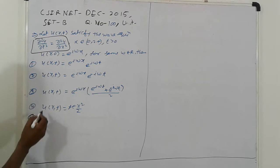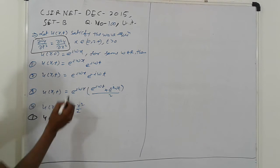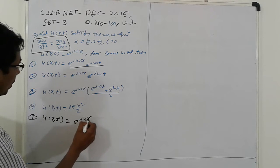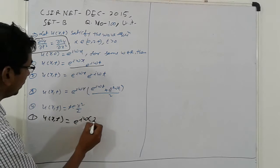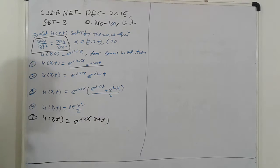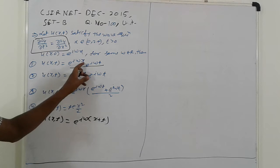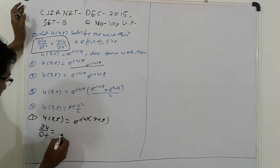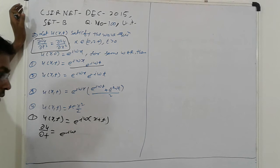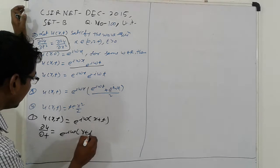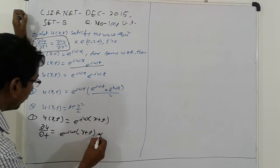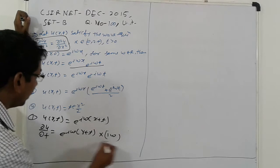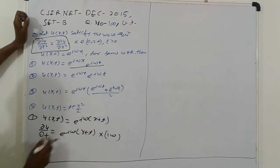First option: u(x,t) is equal to a complex exponential, e raised to iω(x+t), where iω is common and the argument is x plus t. So, ∂u/∂t equals e raised to iω(x+t) into iω, differentiating with respect to t gives iω.